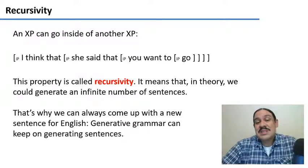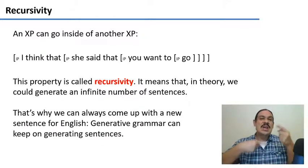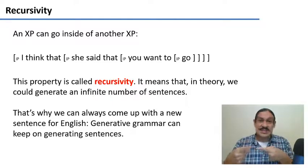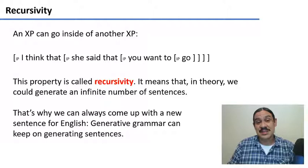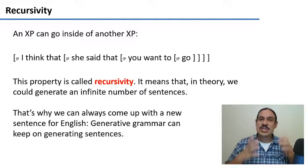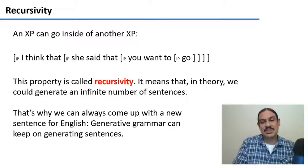This is why you can always come up with a new sentence of English, because these rules allow you to generate new sentences. In theory, an infinite number of English sentences. That's why we call this a generative grammar, because we use these rules to generate the sentences of English.